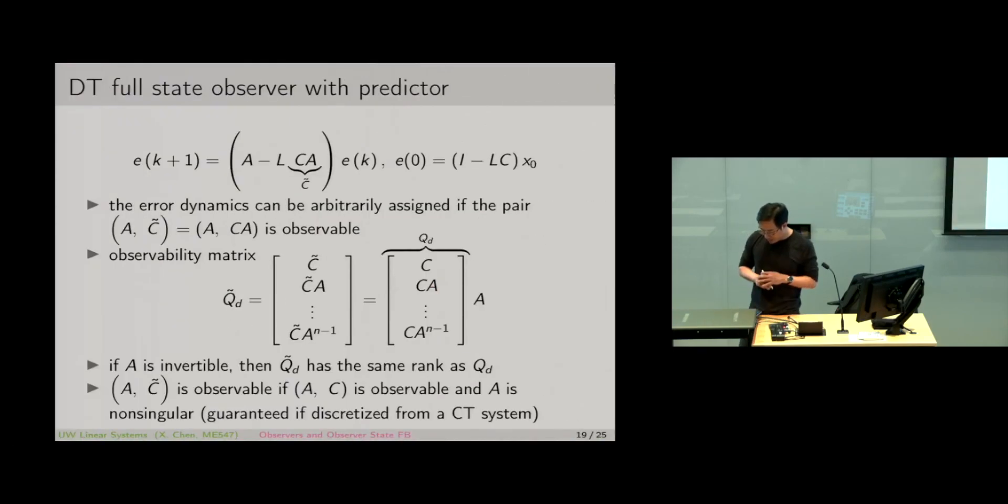So on paper the condition is: if (C,A) defines an observable pair, then this Q tilde will have rank N. And if A is invertible, then the rank between this Q tilde and this Q will be the same. In other words, if A and C is observable, if Q tilde is rank N and A is non-singular, then this new observer with predictor type design will be observable and we can place eigenvalues arbitrarily.